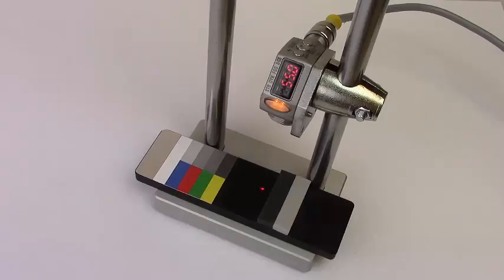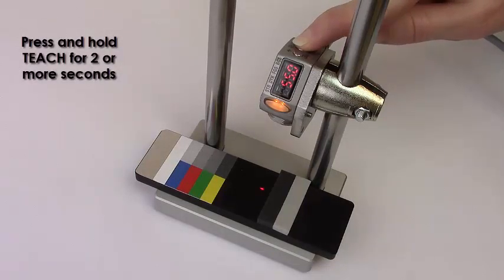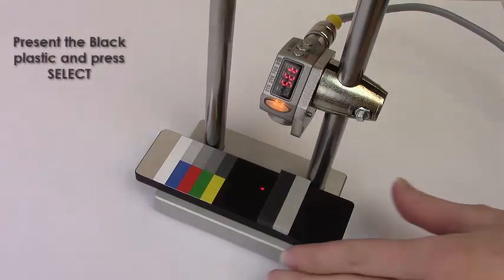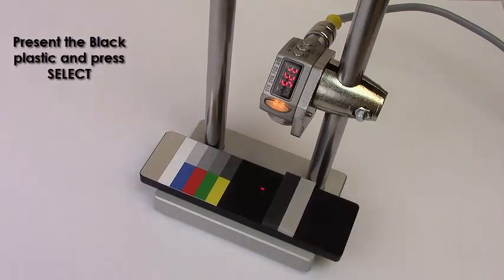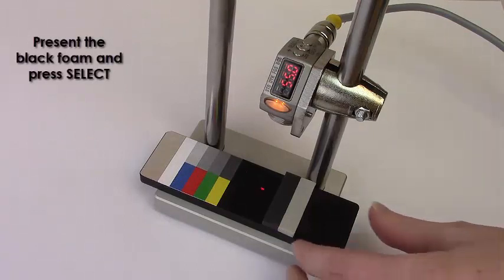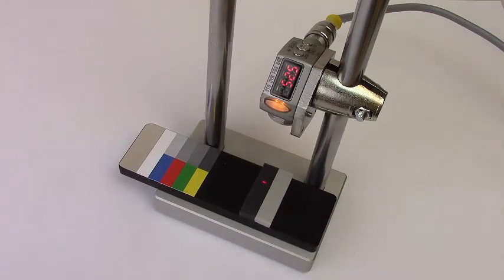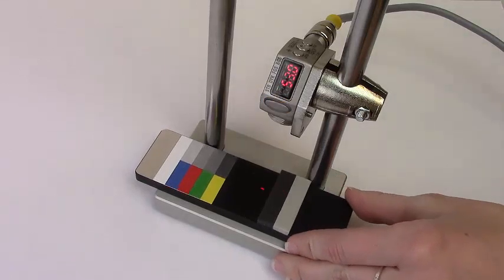The display shows the current distance. Press and hold teach for two or more seconds. Present the black plastic piece and press select. Now present the black foam and press select. The display flashes and returns to run mode. The foam is now detected, but not the background.